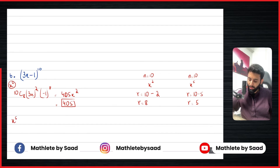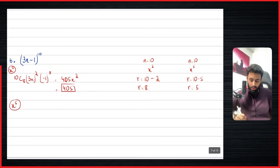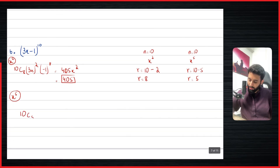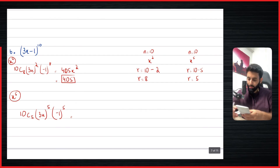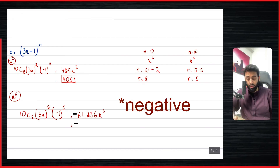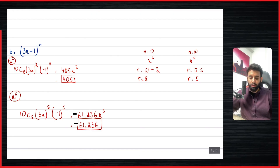For the coefficient of x to the power 5: r equals 10 minus 5, so r equals 5. That gives 10C5, times (3x)^(10−5), times (−1)⁵. 10C5 equals 252, times 3⁵ gives 61,236x⁵. Since we want just the coefficient, the answer is 61,236.